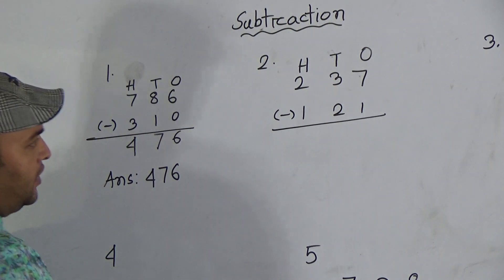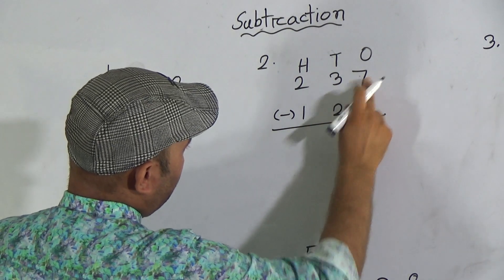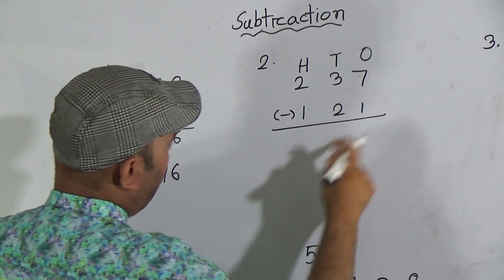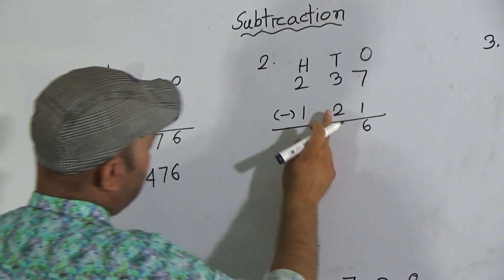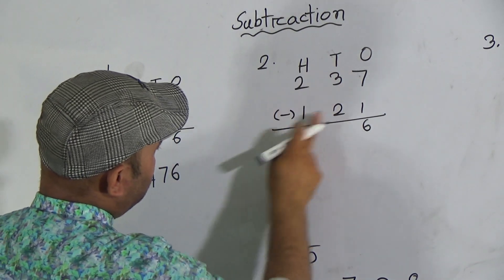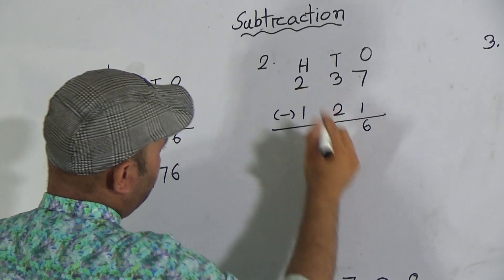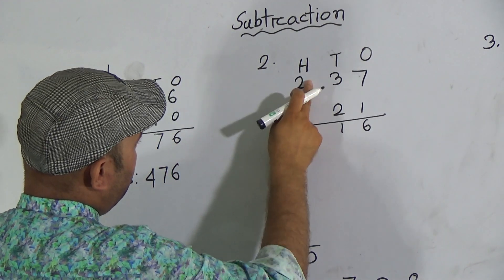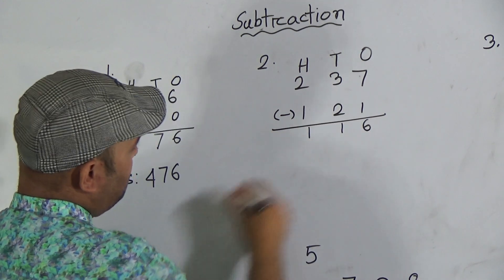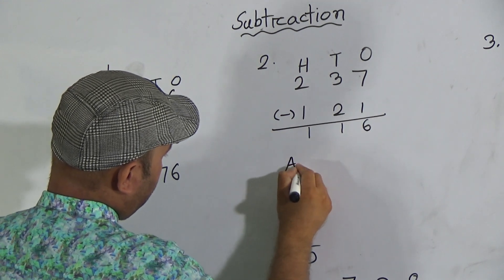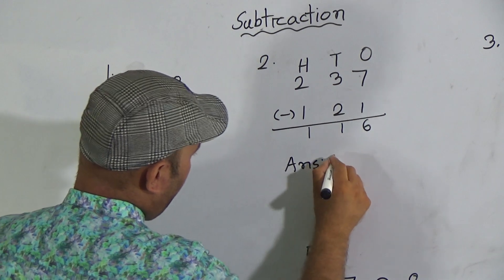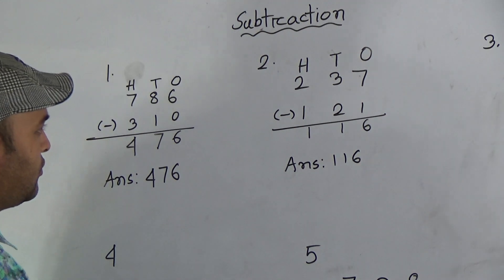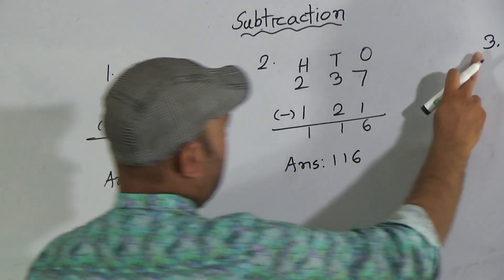Now subtract one from seven — one from seven — it will be six. Now the next column is the tens place: two from three — two from three — it will be one. Here is the next column, hundreds place: one from two — it will be one. So the answer is one hundred and sixteen. My students, hope you understood this one.